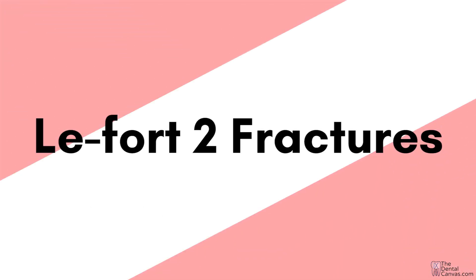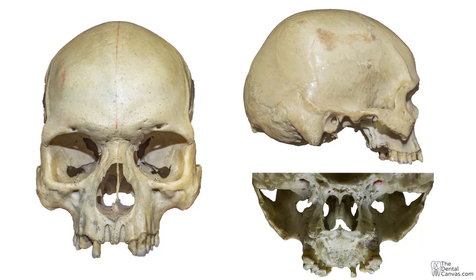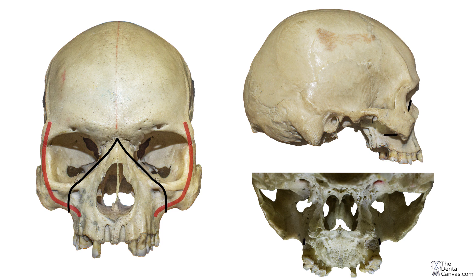Le Fort two fractures, also known as pyramidal fracture. The fracture line starts from the bridge of nose involving frontonasal and frontomaxillary sutures, slanting downwards involving the medial orbital wall and lacrimal bone. The fracture line then extends to the infraorbital rim and lateral to the infraorbital foramina, fracturing the zygomatico-maxillary buttress, posterolateral wall of maxillary sinus, and finally terminating at the middle third of pterygoid plates.